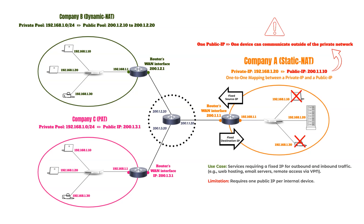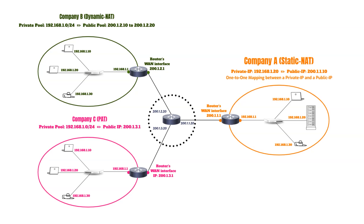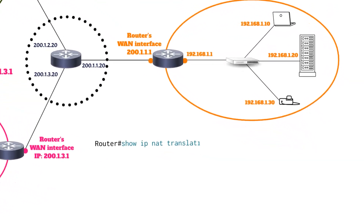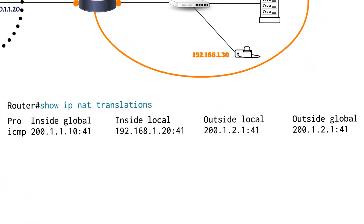Another key aspect of proper NAT configuration is accurately defining the inside interface, which connects to the private network, and the outside interface, which links to the external or public network. Furthermore, understanding the following four NAT-related keywords is essential for successful implementation.